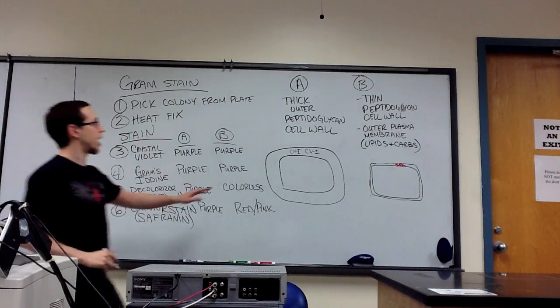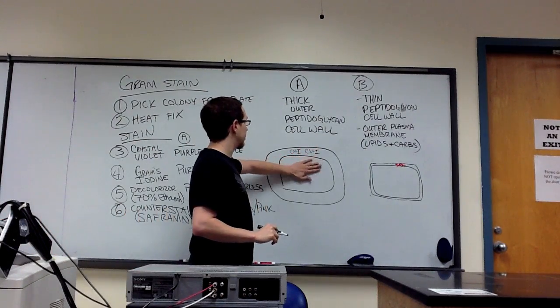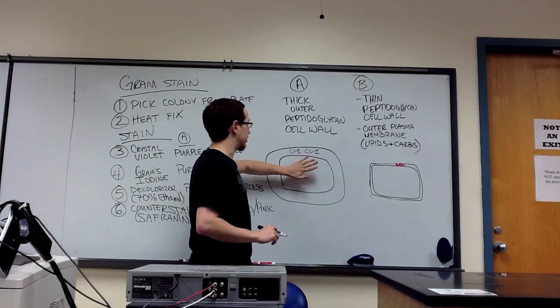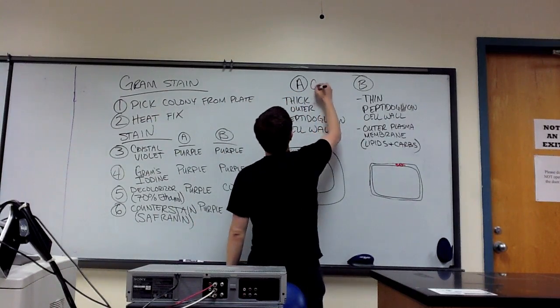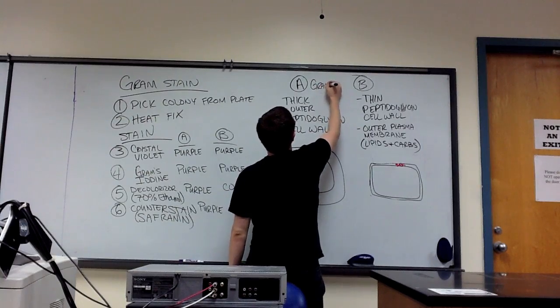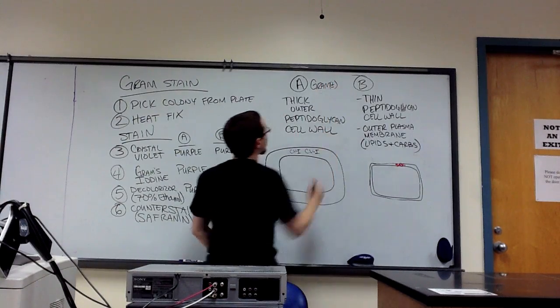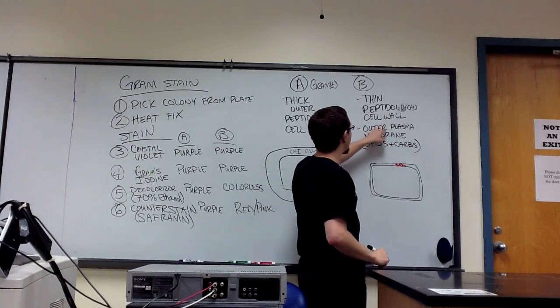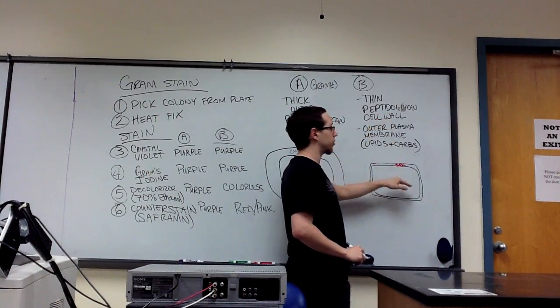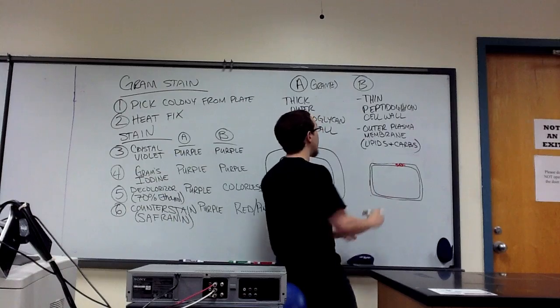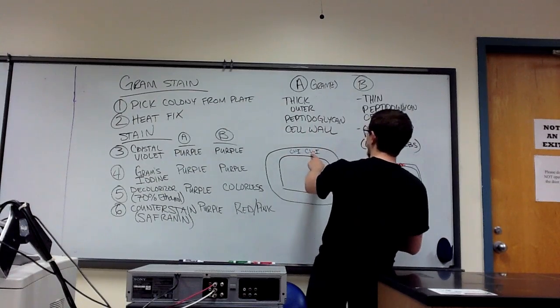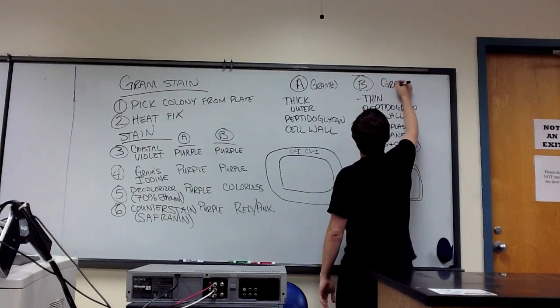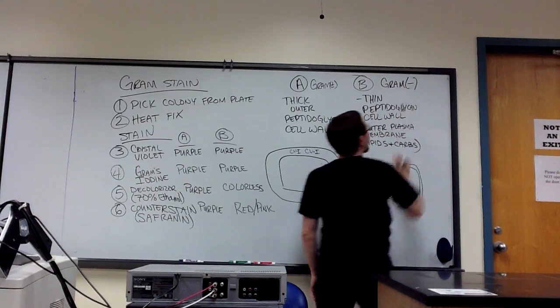So at the end of this staining procedure, this particular cell type denoted as cell type A is purple, and these are denoted as gram-positive bacteria. This particular cell type with the outer membrane and the thinner peptidoglycan cell wall stain red, do not retain the crystal violet in Gram's iodine complex, and therefore denoted as gram-negative bacteria.